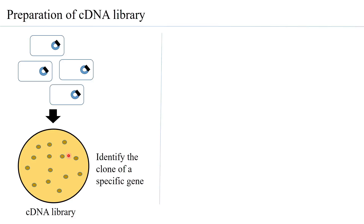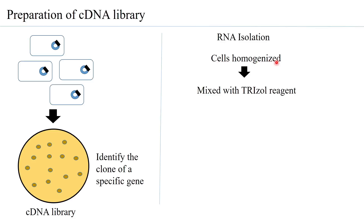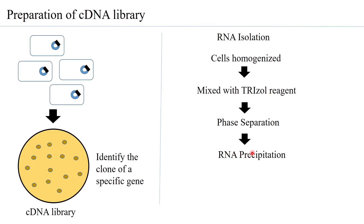Looking at the first step — RNA isolation — the cells are homogenized and then mixed with trizol reagent. Trizol stands for total RNA isolation reagent, and these are commercially available and commonly used for isolating RNA. Once mixed with trizol reagent, an organic solvent is added to achieve phase separation. The aqueous phase is collected and subjected to ethanol precipitation or isopropyl alcohol precipitation to get RNA.